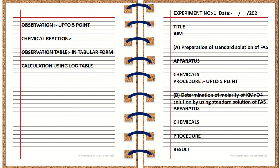On the exact front side of this page — the left-hand side — you have to write the observation up to the end point, then the chemical reaction, then the observation table. The observation table should be in tabular form, followed by calculations using the log table. All these things should be on the left-hand side, and should be written using the provided practical handbook. If any content remains and the page does not have sufficient space, right-side content should continue on the right page, and left-side content should stay on the left page.